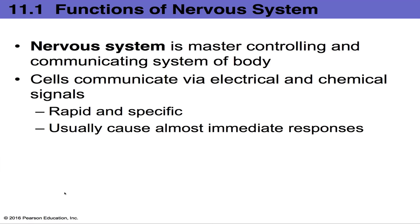The nervous system serves as the master control center of our body, and it's also the main communication system. Everything that takes place in our body is generally influenced by the nervous system. Our thoughts, actions — such as deciding to move toward or away from something — our emotions, and the function and rate of our internal organs are all influenced by the nervous system.